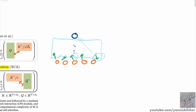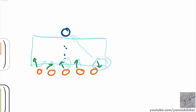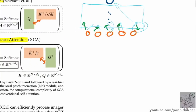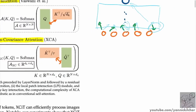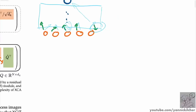In cross-covariance attention we do something similar, but think about it differently. Instead of watching the tokens as a sequence, we watch the channels as the sequence. If we have five data points each with four dimensions, each channel now exposes a query and a key, and information is routed not from token to token but from channel to channel.